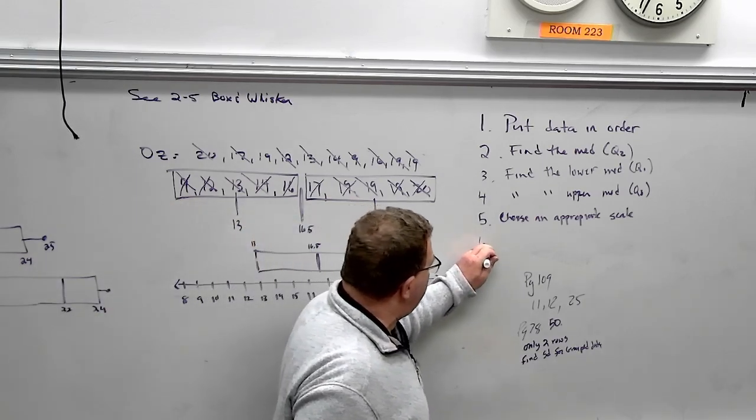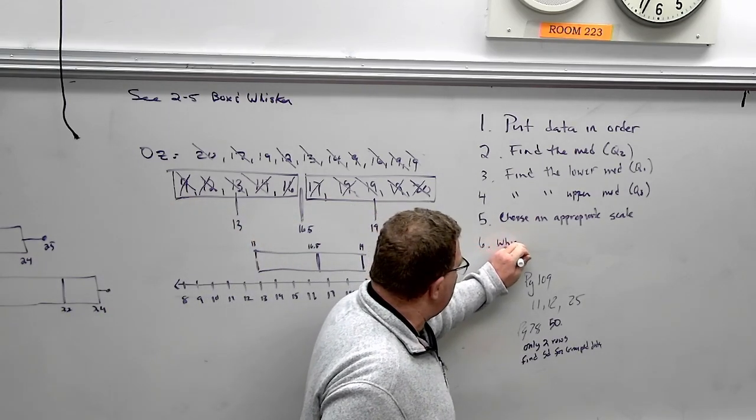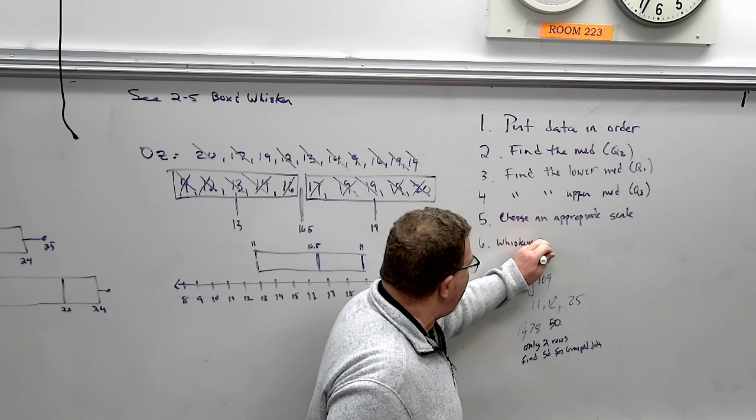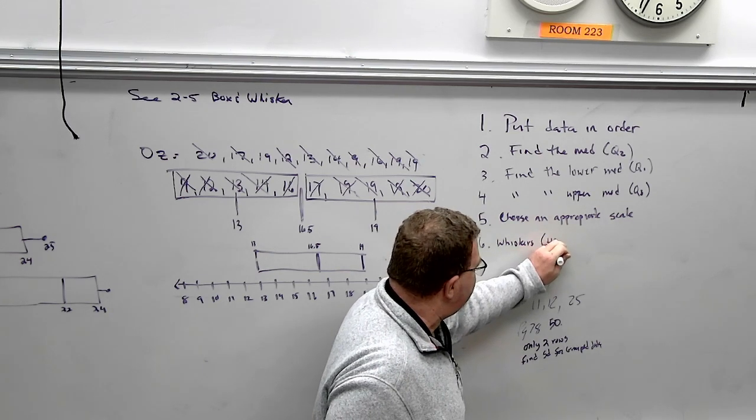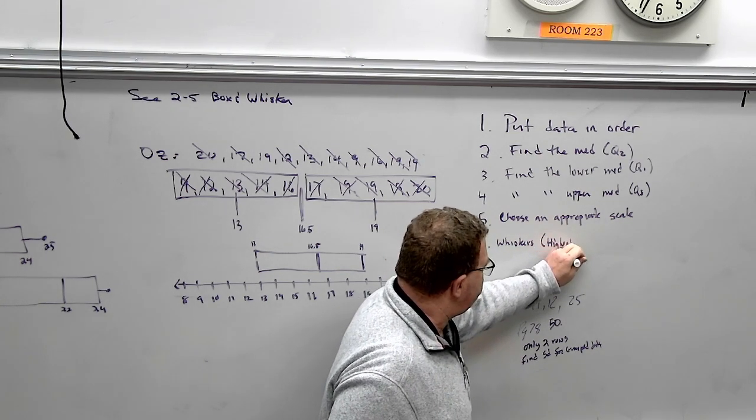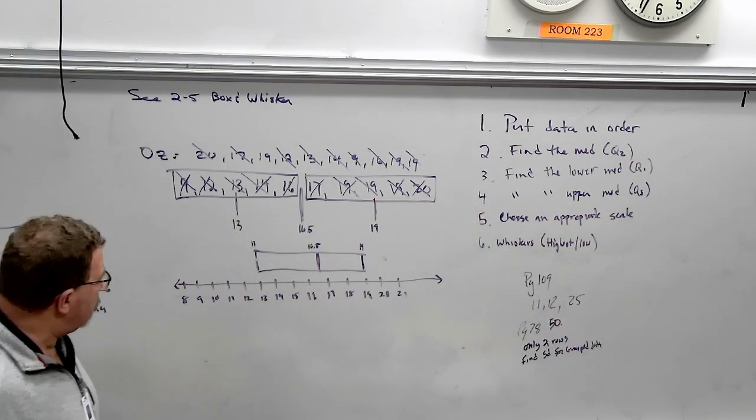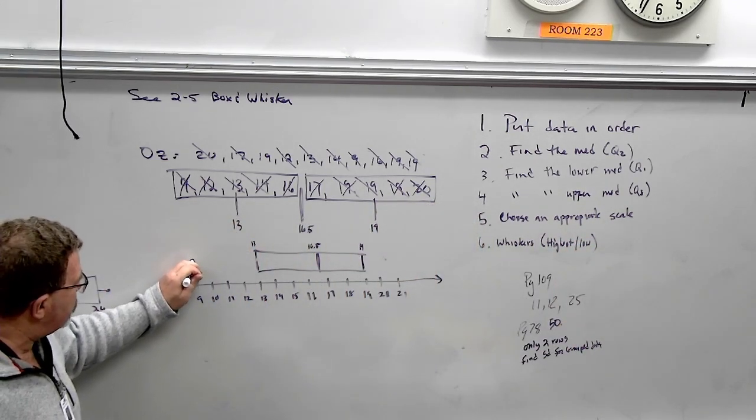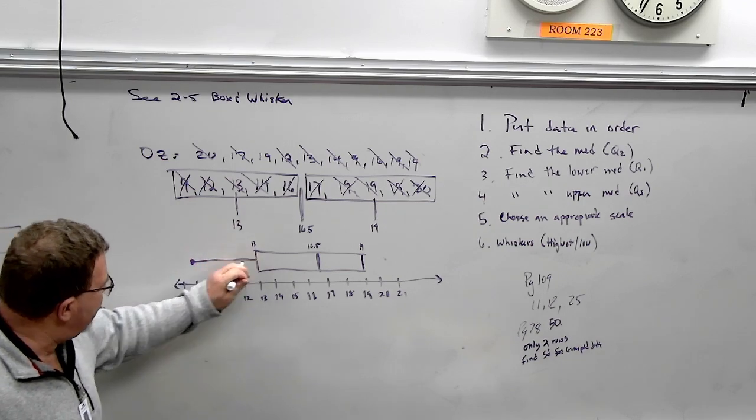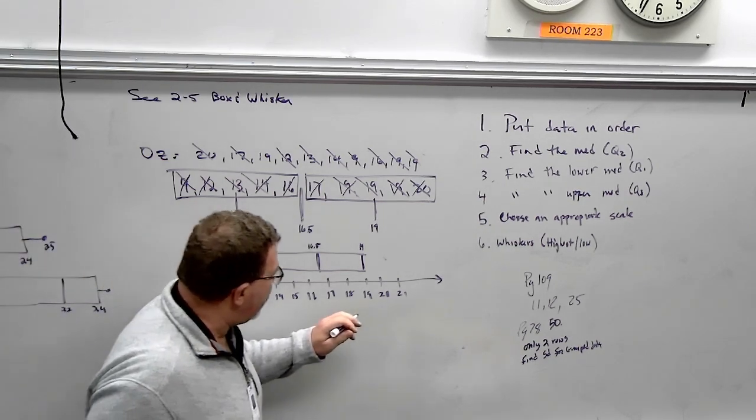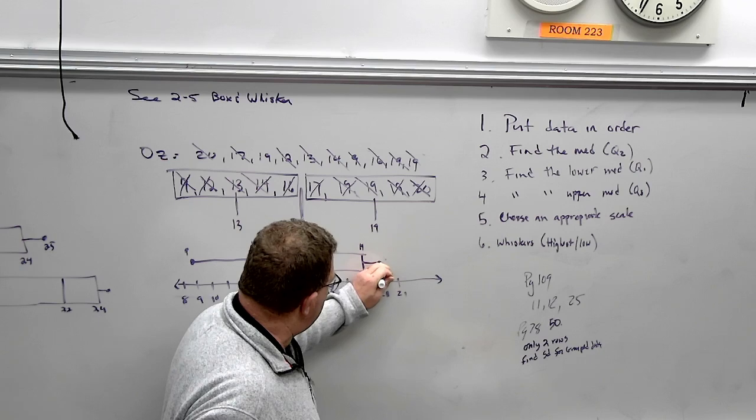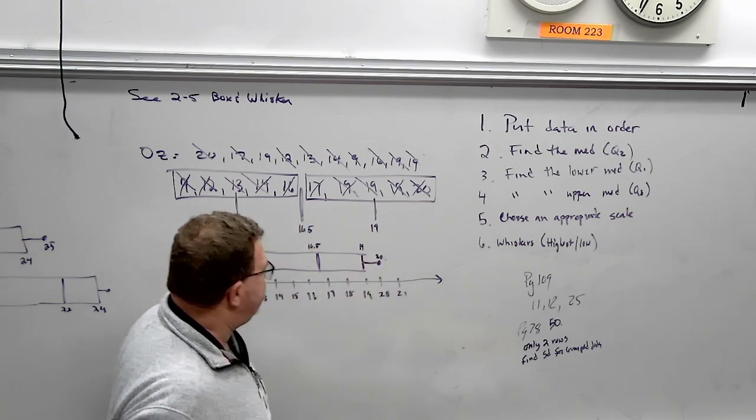Your last step are your whiskers. And your whiskers are just your highest and lowest values. Your highest and your lowest. Our lowest score was a nine. So there's my whisker to there. And my highest was 20. There you go.